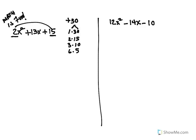So I know that whatever two numbers I use, they have to have the same sign because I need a product of a positive 30. So I'm going to use the 3 and the 10.